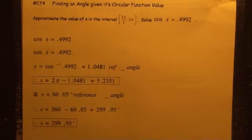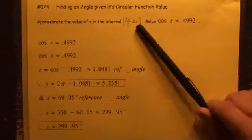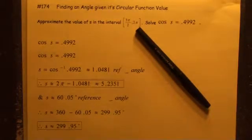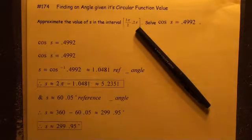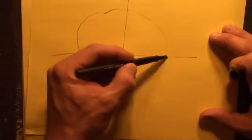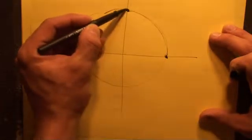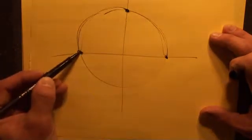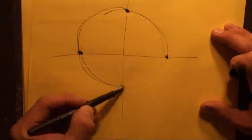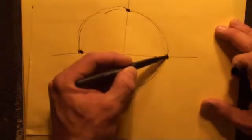The first thing we want to identify is what quadrant that interval is. That is definitely Quadrant 4. You need to know how to create your own unit circle. You've got 0, π/2, 2π/2 which is π, 3π/2, and then 4π/2 which is 2π. So you have 0, π/2, π, 3π/2, and 2π.